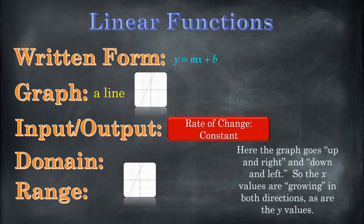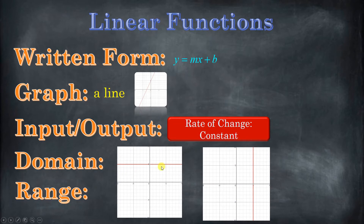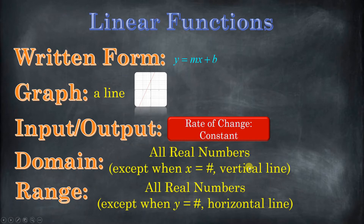Now let's talk about domain and range. If you have a typical linear equation with a positive or negative slope, then your domain and range are just going to be all real numbers. The two exceptions are the horizontal line — like y equals five — and the vertical line — like x equals five. For the horizontal line, the domain is all real numbers but the range is only that one number. For the vertical line, the domain is just that one number, but the range is all real numbers. So it's typically all real numbers for both domain and range for a linear function, but be careful of those exceptions.